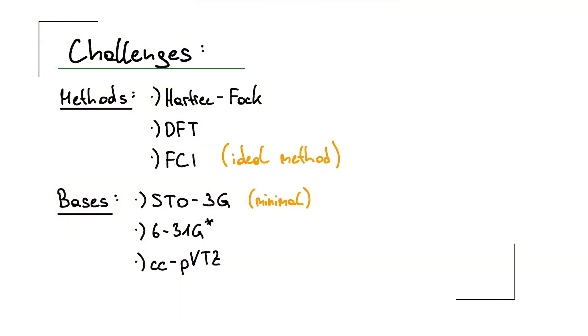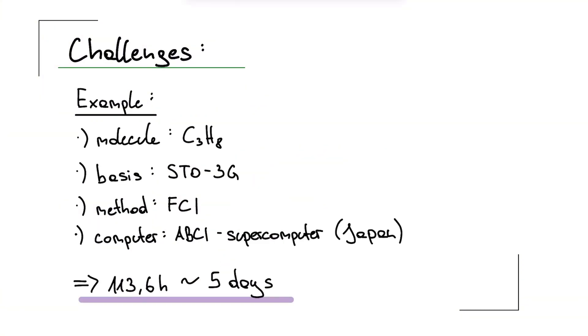And for completeness, here are also three basis sets you can choose from depending on the desired accuracy and available computational power. I have chosen a study that I will also link in the video description. And in this study, the authors looked at the molecule C3H8, which is propane. They used a minimal basis set STO-3G and applied the FCI method, the gold standard where the system is described in its entirety.